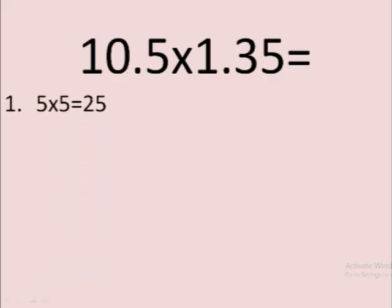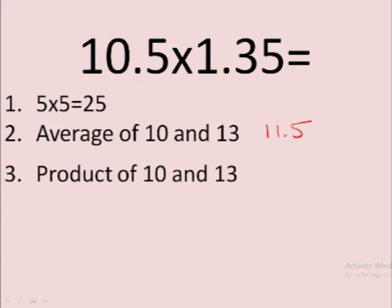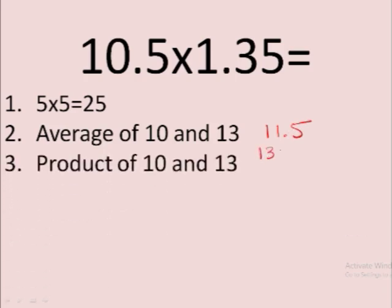So at the end there is 25, and 10 and 13. So what will be the average of 10 and 13? 23 by 2, that is 11.5. If you multiply it, you get 130. If you add them, you will get 141.5. Again there's a 0.5.